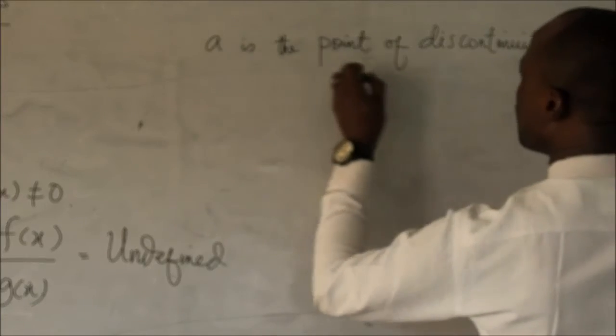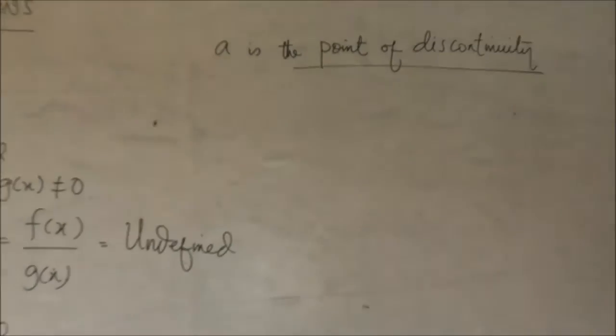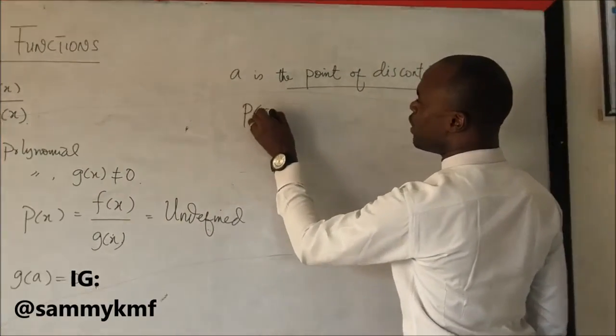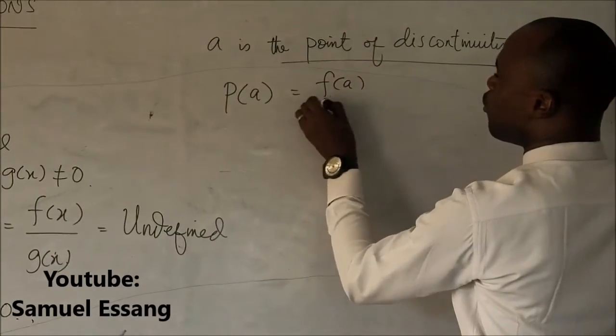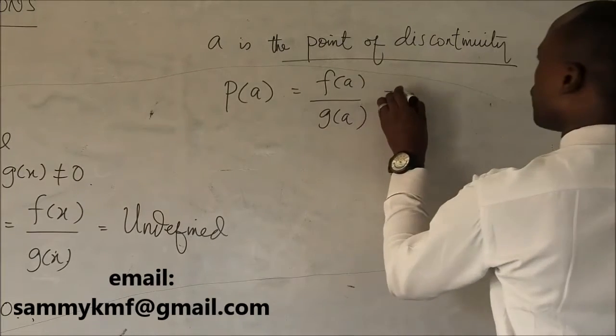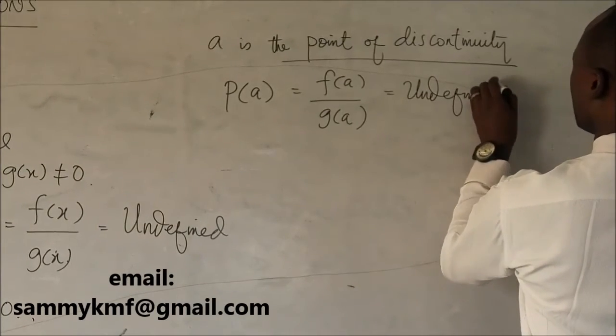That's what we call a. That's the point where p of a will be equals to f of a over g of a. And when this is zero, this becomes undefined.